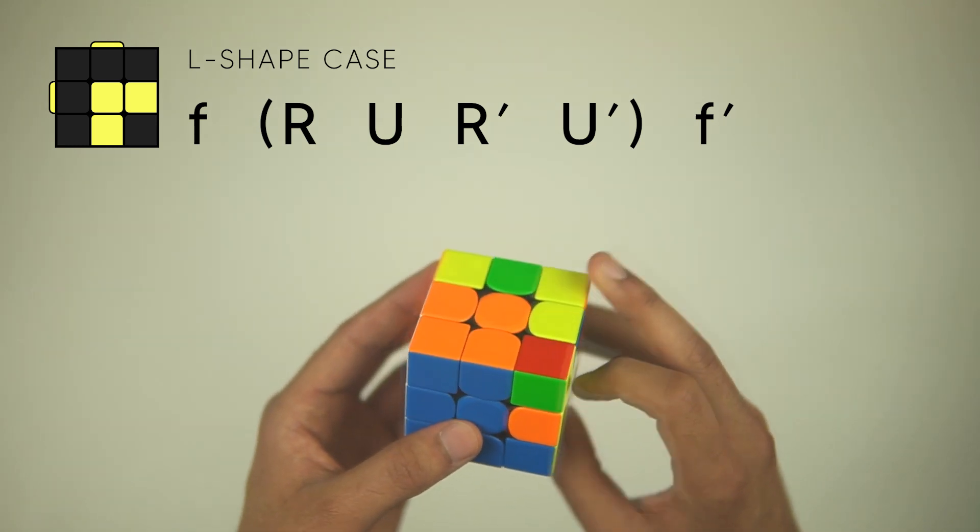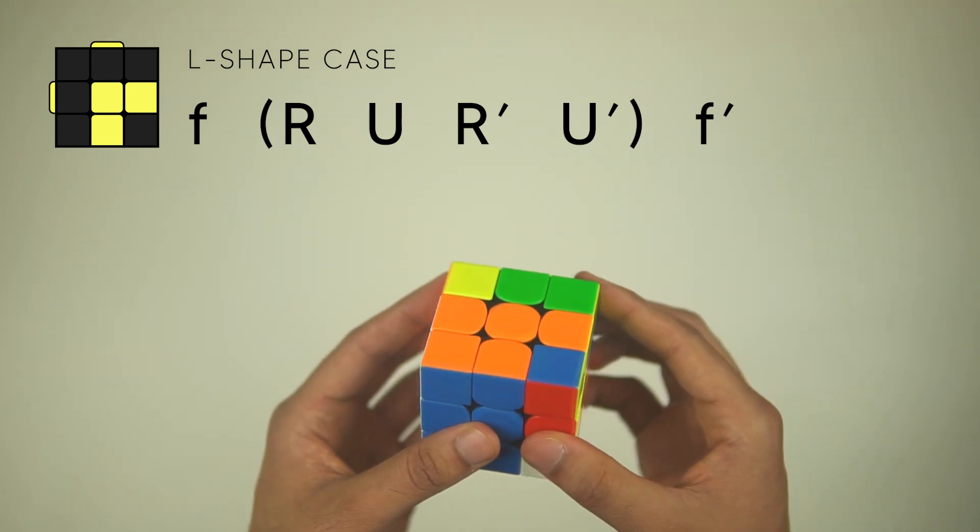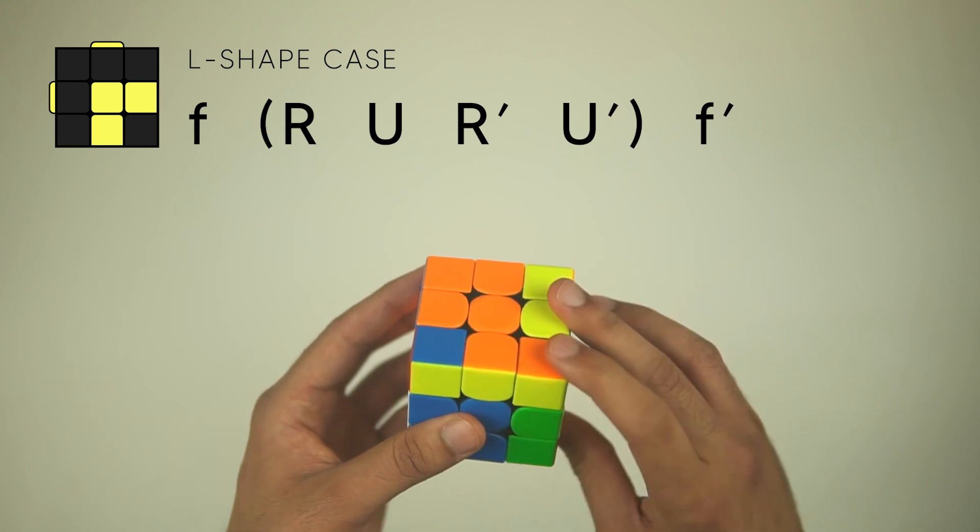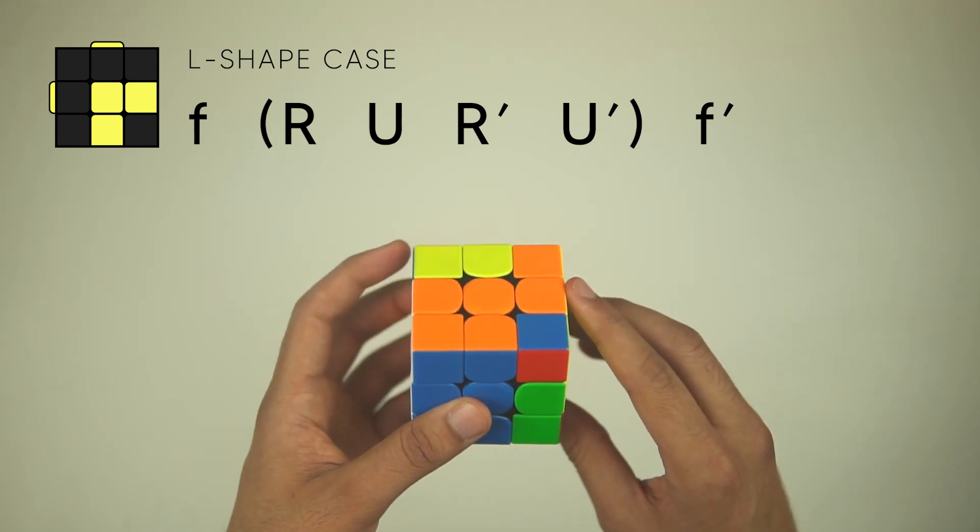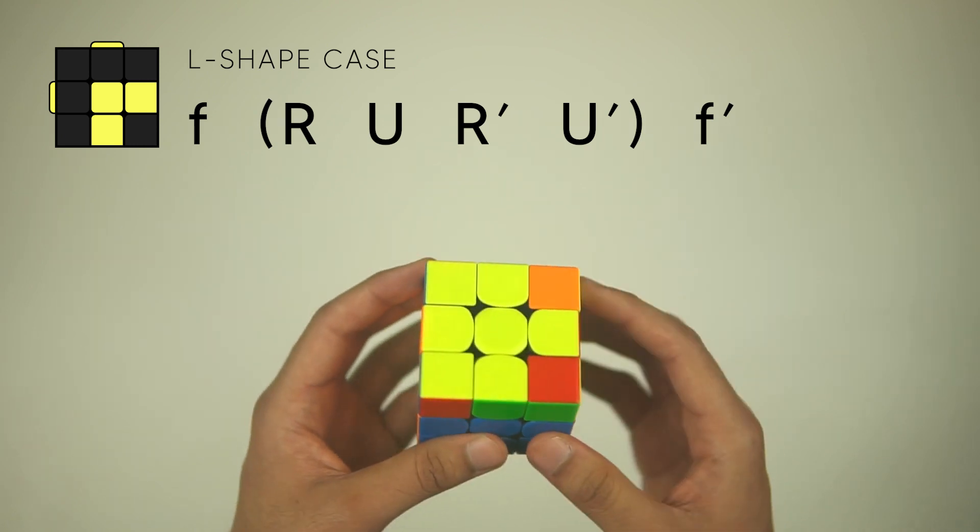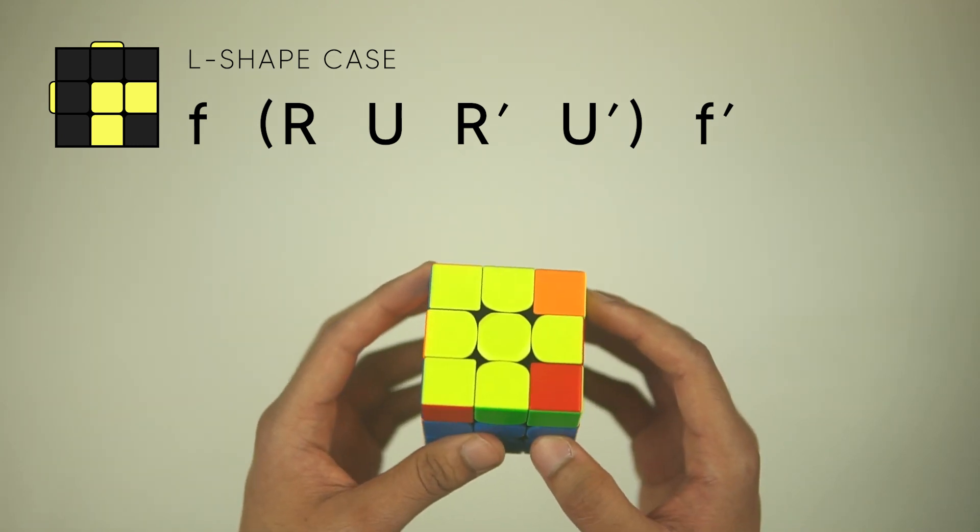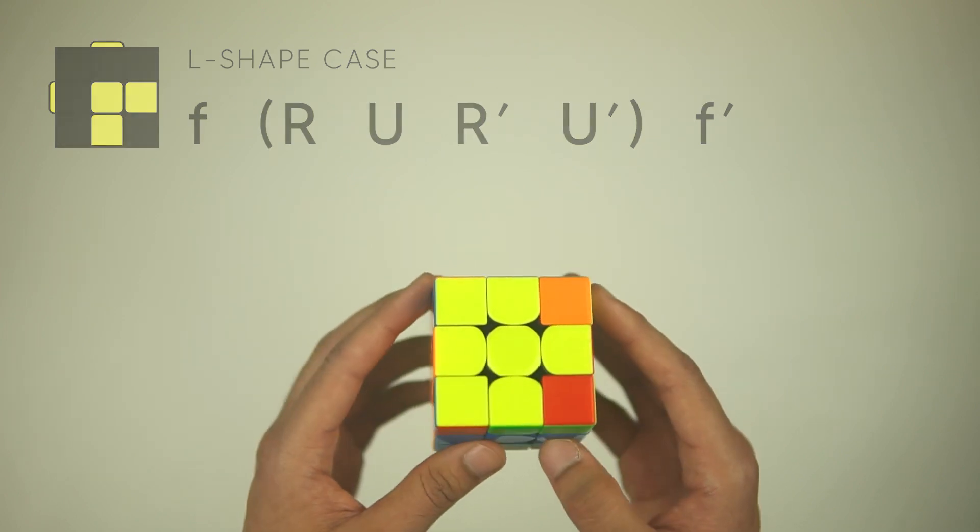This is what it looks like: lowercase F, notice how the middle layer moves with the F, then an R, U, R', U', lowercase F' back to return the front and the middle layer. So the middle part is the same, it's just the F's that are different from the line case, and there's the yellow cross.